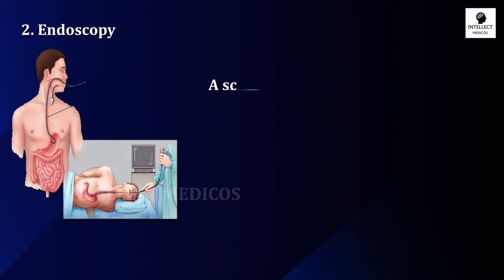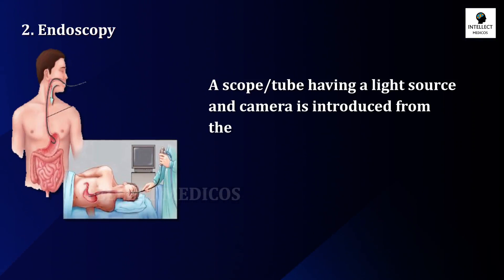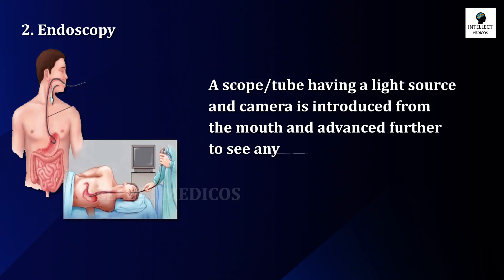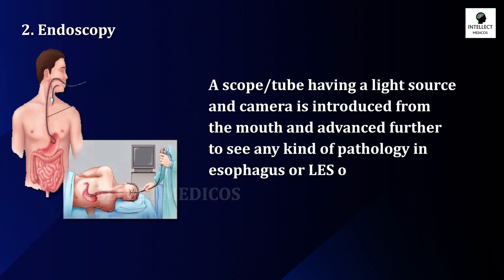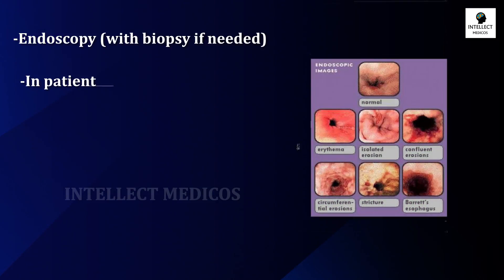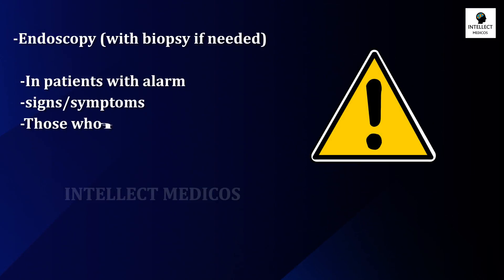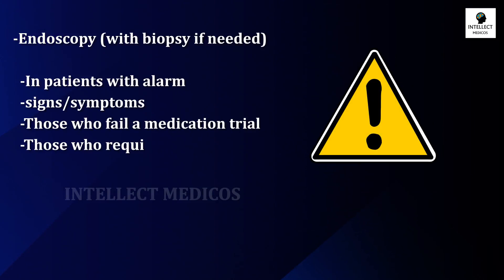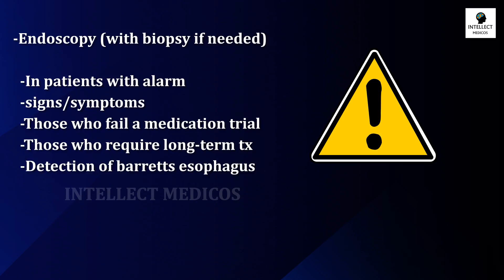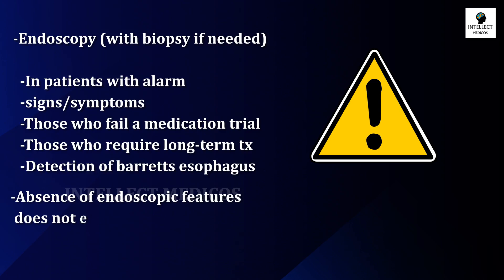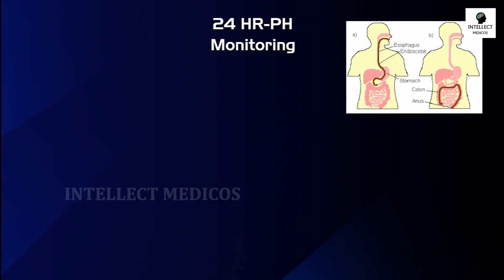The next test is endoscopy. A scope or tube with a light source and a camera is introduced from the mouth and advanced further to see any pathology in the esophagus, LES segment, stomach, or duodenum. Endoscopy is done in patients with alarming signs or symptoms, in those who fail a medication trial, in those who require long-term treatment, and for the detection of Barrett's esophagus — which we'll discuss later. Note that absence of endoscopic features does not exclude a GERD diagnosis.